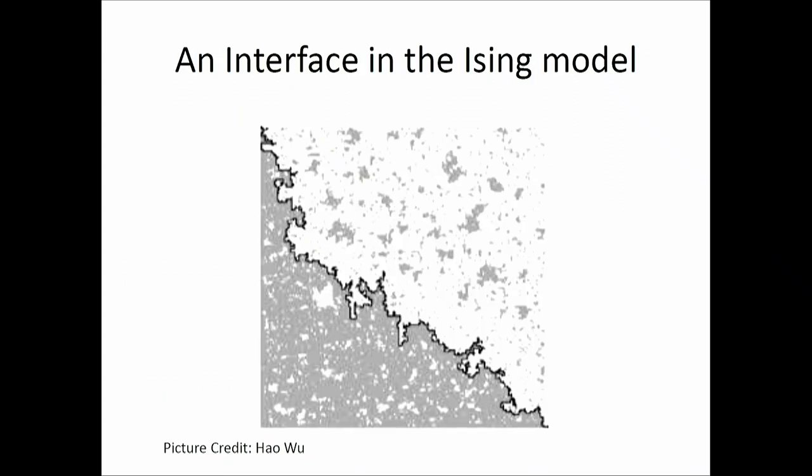Here is an interface from a much larger simulation. The boundary conditions are set such that these are all spin-up on one side and all spin-down on the other, so this path is forced to come in at one corner and go out at the other corner. Islands of the other spin appear, but here we have a complete interface. This interface actually looks like a fractal — and fractals were discussed in the previous lecture.